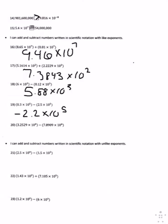The last one, number twenty, the exponents are the same, so you subtract 2.3529 minus 7.8909, which gives you negative 4.638 times 10 to the 4th power.